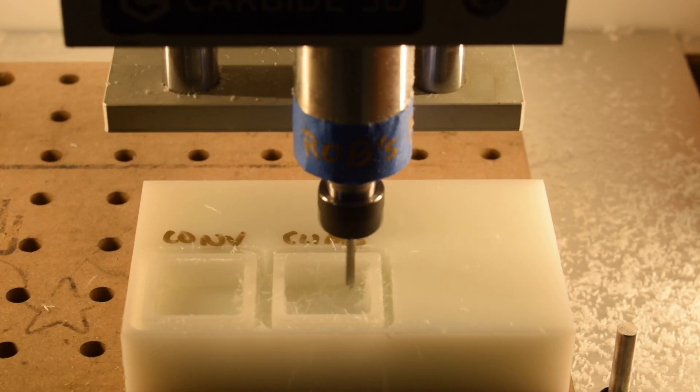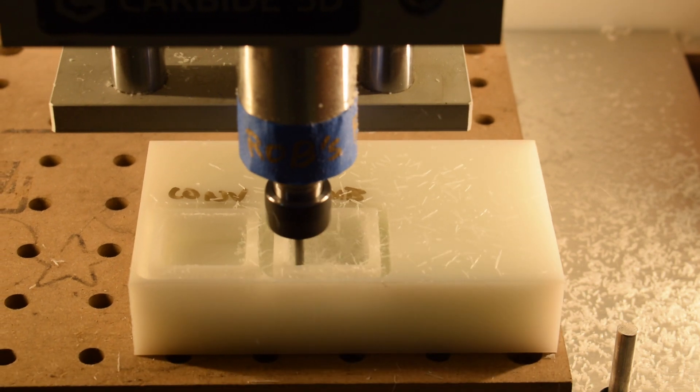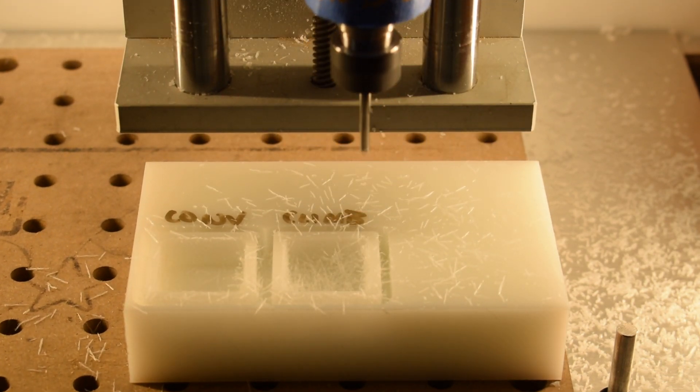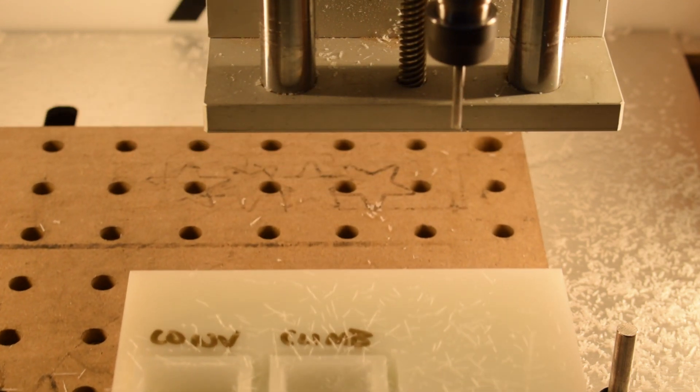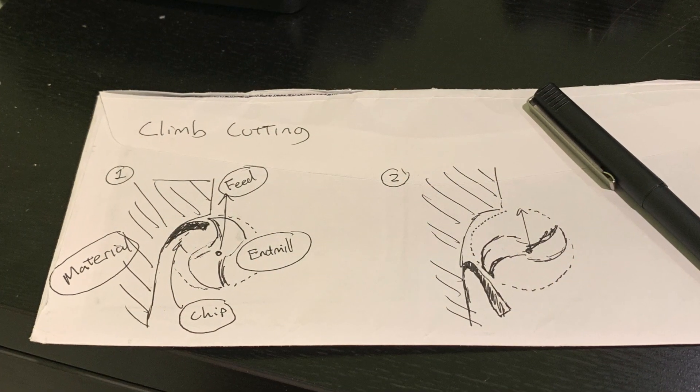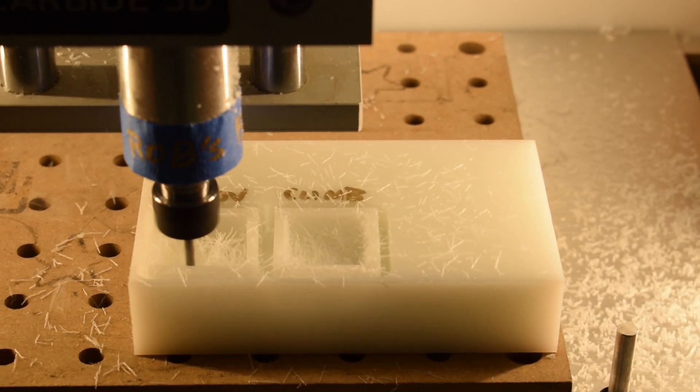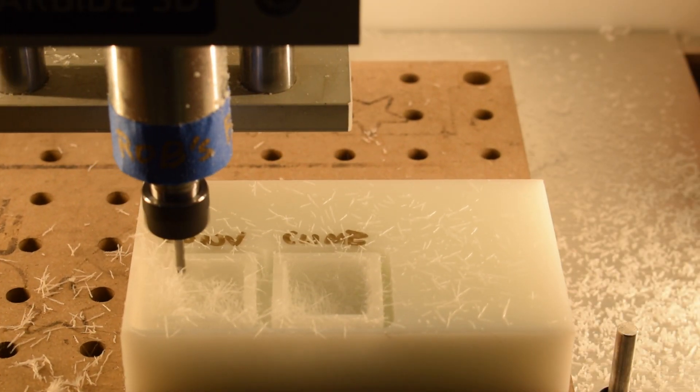Now, here's a small wrinkle in the process. I usually run every toolpath in climb cutting mode, but in HDPE and other really soft materials, that can actually leave material attached to the wall, as shown by my really poor literally back of the envelope sketch. So running a finishing toolpath in conventional cutting will actually yield much better results.